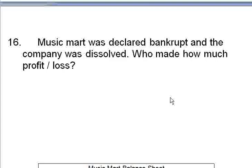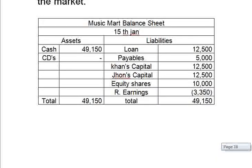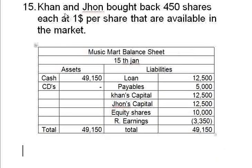In the next transaction, MusicMart is declared bankrupt and the company is dissolved. The question is how much profit or loss did Khan and John each make? Note that Khan originally had 100 shares, and both Khan and John bought back 450 shares each, meaning all 1,000 shares in the market are now held between Khan and John only. Calculate the profit and loss for Khan and John — that will be the task covered in the next video.